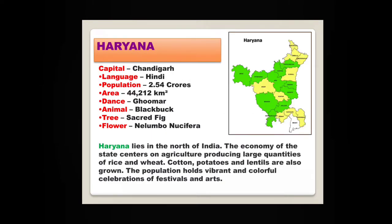Haryana — capital Chandigarh. The animal most commonly found here is the blackbuck, which is a kind of deer. Haryana lies in the north of India. The economy of the state centers on agriculture, producing large quantities of rice and wheat. Cotton, potatoes and lentils are also grown here. The population holds vibrant and colorful celebrations of festivals and arts.